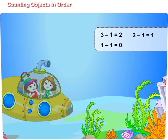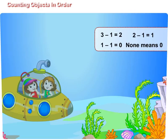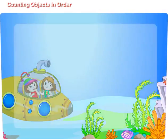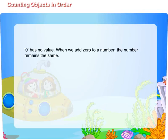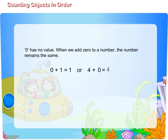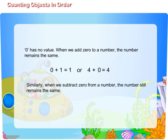Maggie, do you know that in mathematics, none is written as zero. So, if you say there is none golden fish, it means there is zero golden fish. Zero has no value. When we add zero to a number, the number remains the same. That is, zero plus one is equal to one. Or, four plus zero is equal to four. Similarly, when we subtract zero from a number, the number still remains the same. That is, three minus zero is equal to three. Or, eight minus zero is equal to eight.